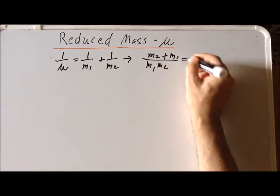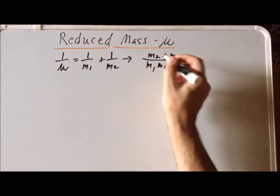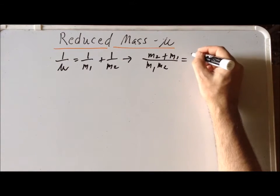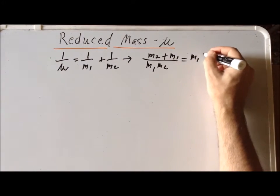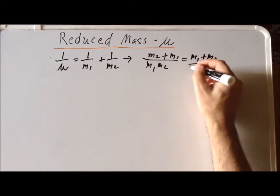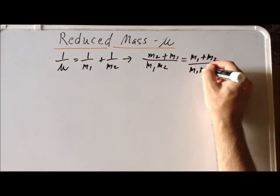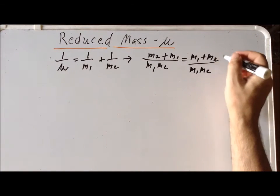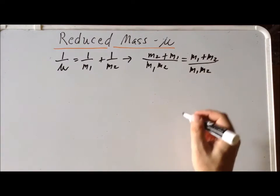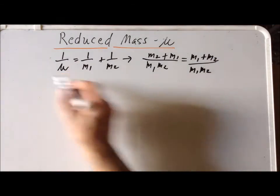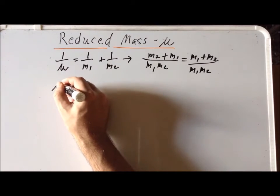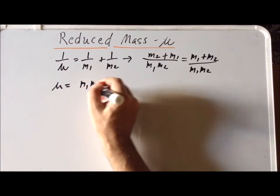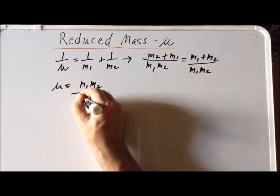And we could simply rewrite this because the masses M1 and M2 are simply whole numbers, so the order does not matter. So we can write them as M1 plus M2 divided by M1 times M2. So this gives us the inverse of the reduced mass. And then you take the reciprocal of each side to see that the reduced mass is going to be M1 times M2 over the sum M1 plus M2.